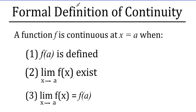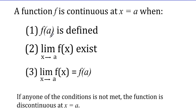So the formal definition of continuity: if you're trying to determine whether a function is continuous at a given point, you have to go through the definition of continuity. Basically it states: a function f is continuous at a point x equals a when three of the following things are true. First, f of a is defined — so when you put a into the function, you get back something that actually exists. Number two, the limit as x goes to a — so if a is 2, as x goes to 2 — of f of x exists.